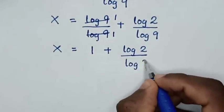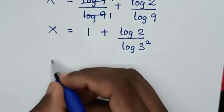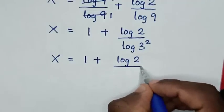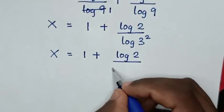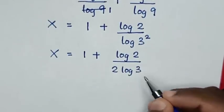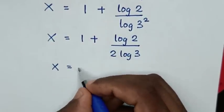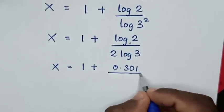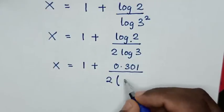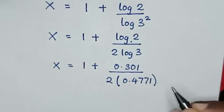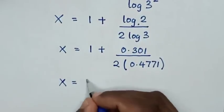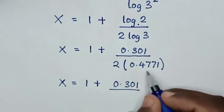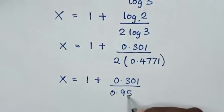Where 9 is 3 power 2. So it will be x is equal to 1 plus log of 2 over log of 9, where log of 3 is 0.4771. Then it will be x is equal to 1 plus 0.301 over 2 times 0.4771, which is 0.9542.